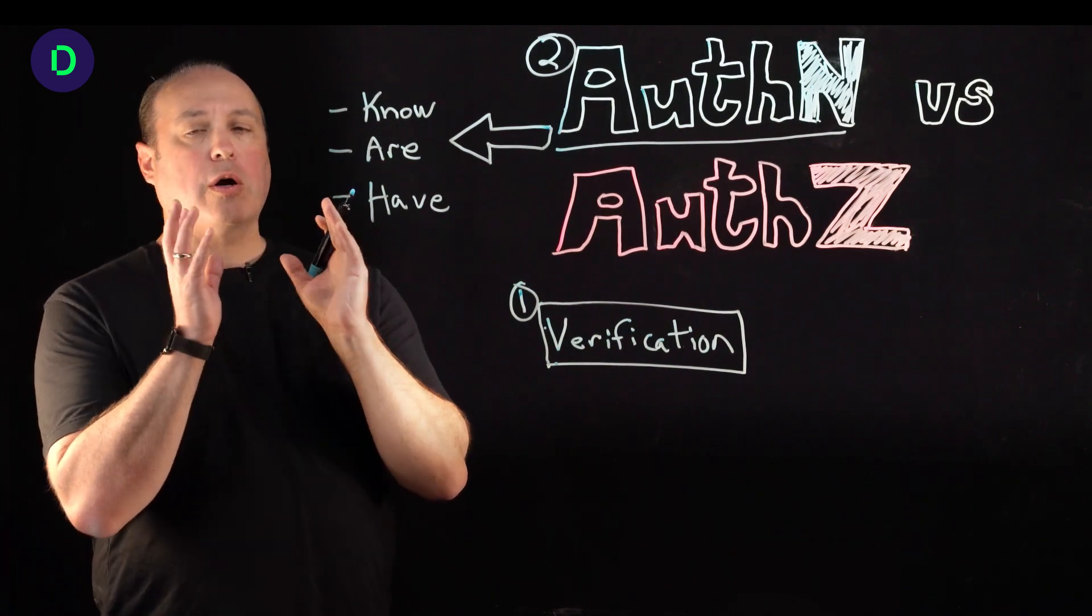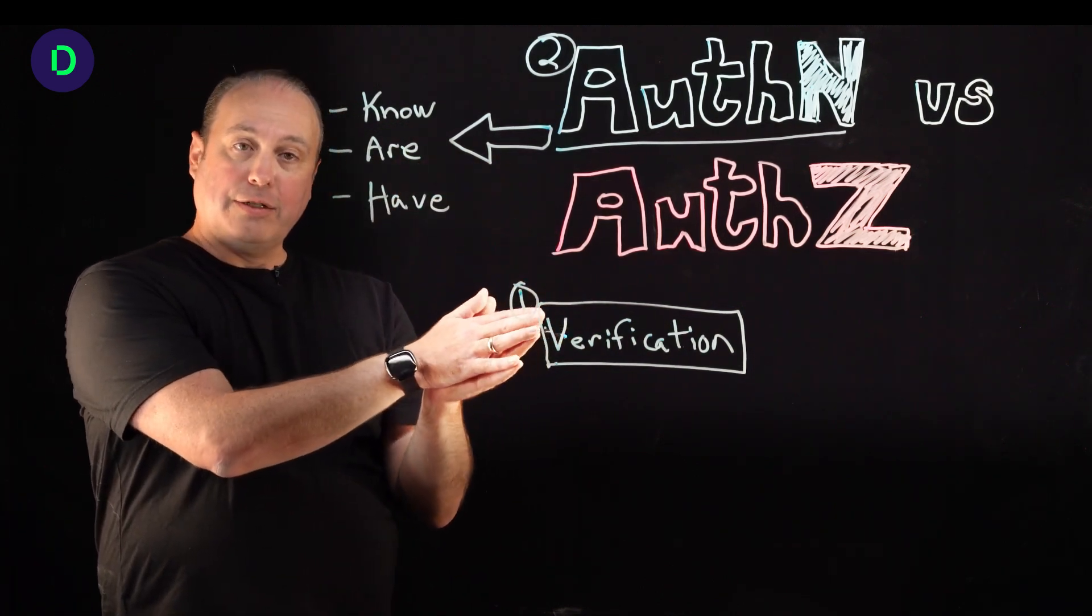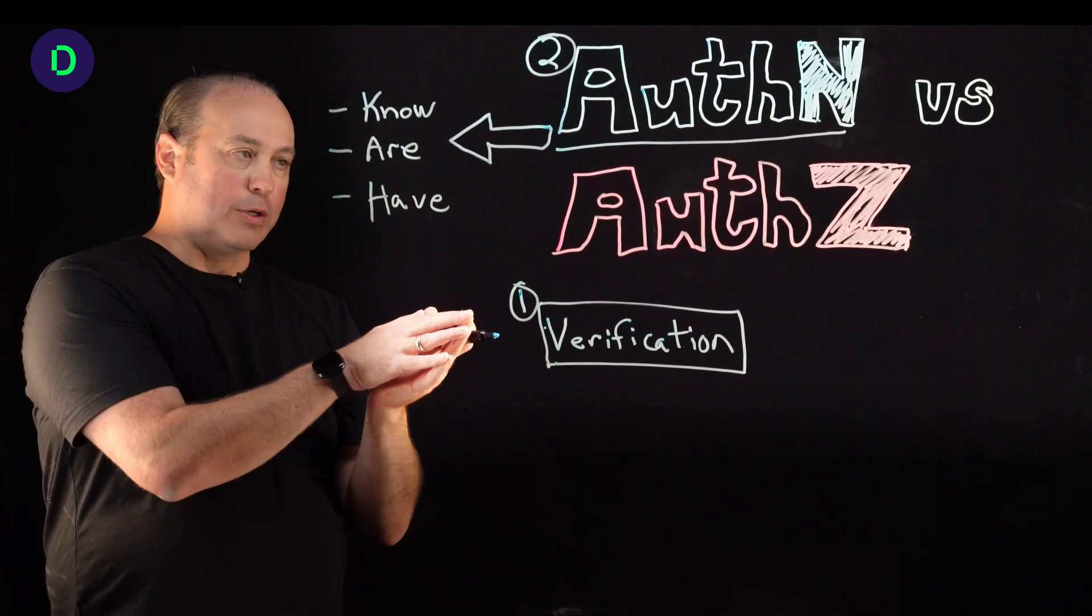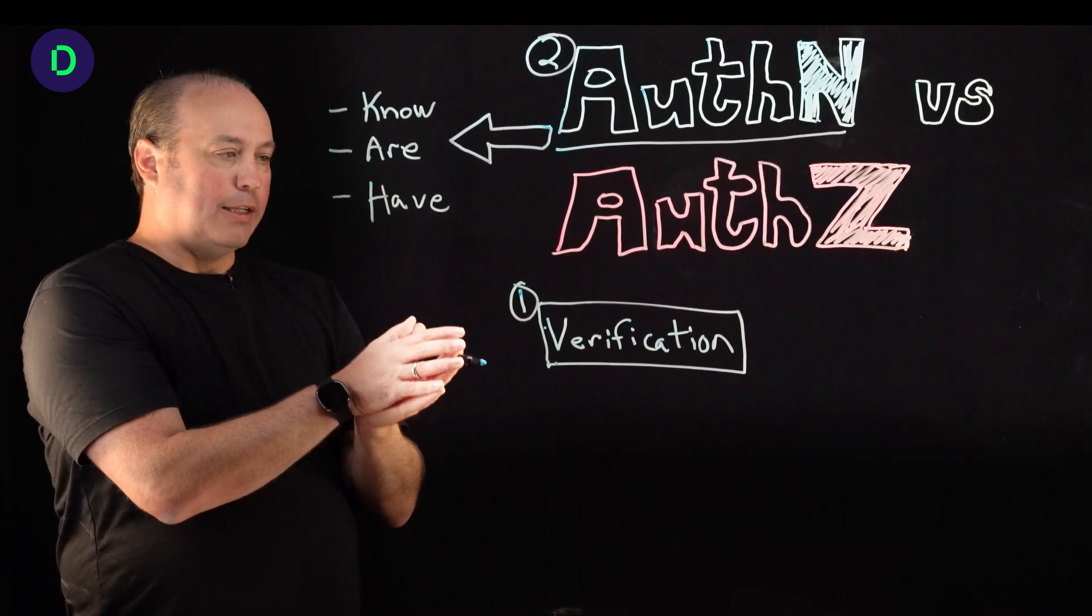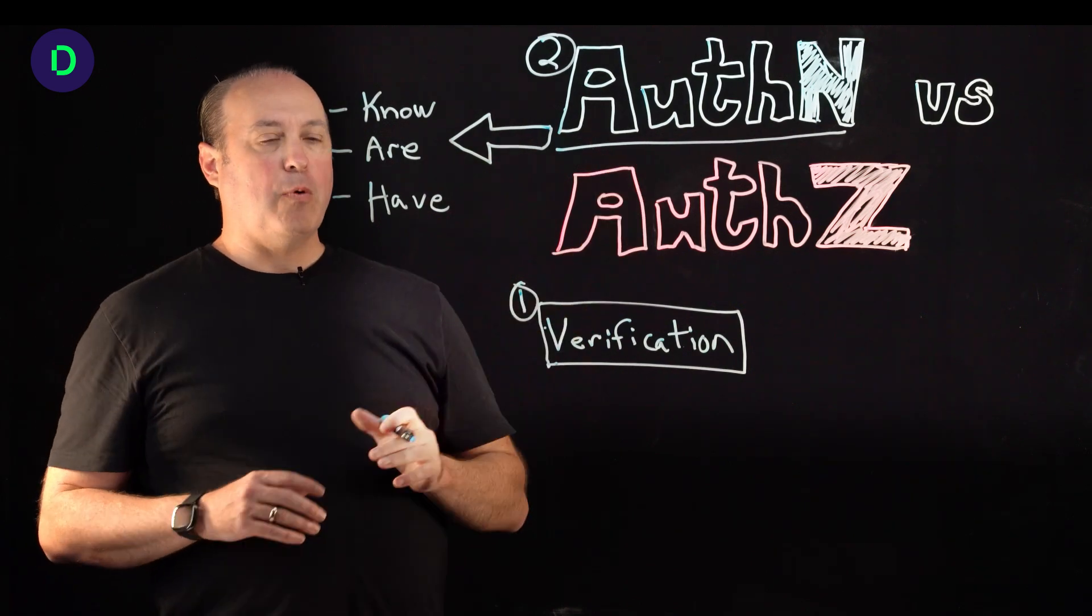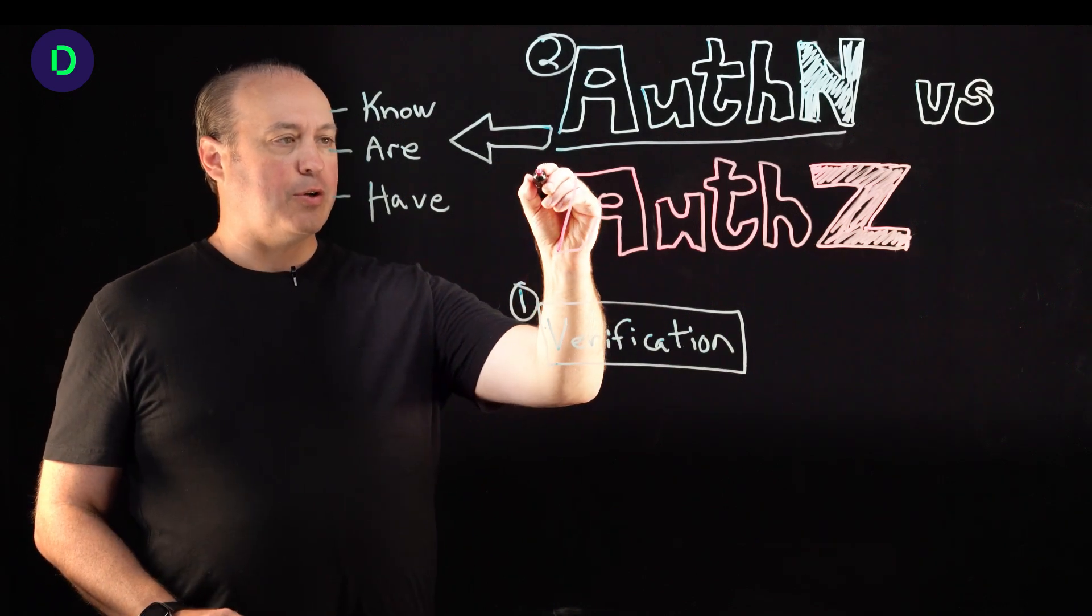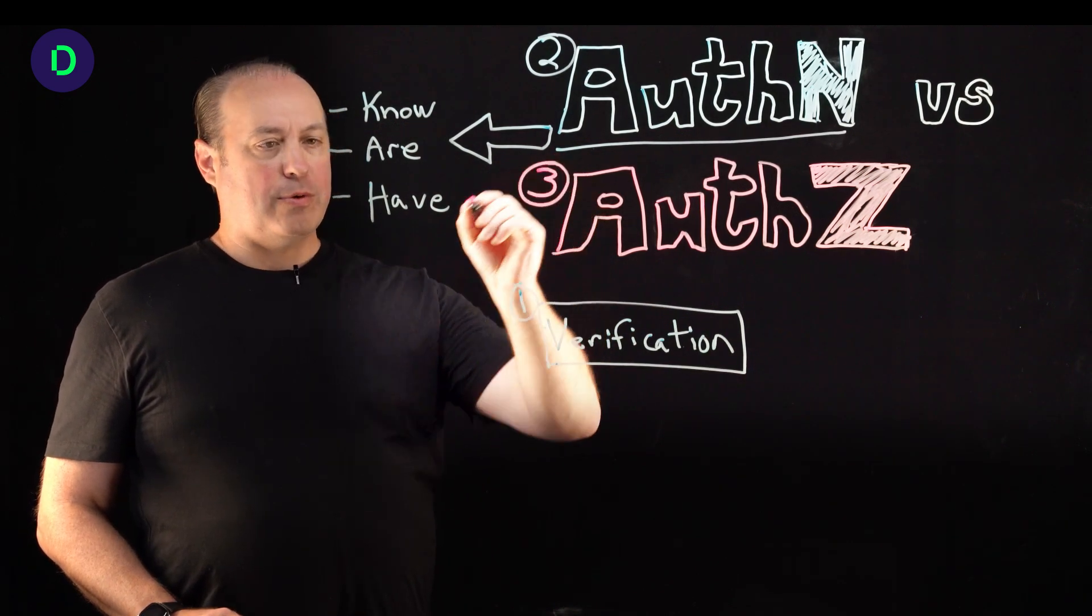And then once you are authenticated, then you are allowed access to your target system, your network, or to complete a transaction, like a bank money transfer, et cetera. So authentication is very important. But a big, big part of this story that you need to understand is really this third part here. And that is authorization.